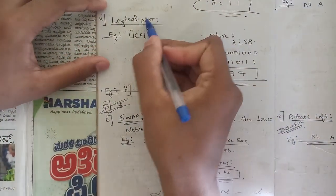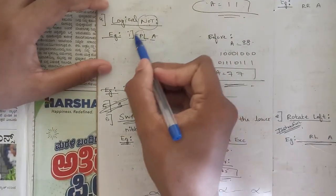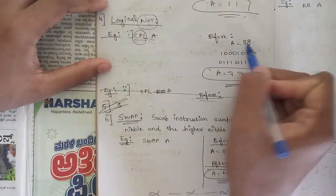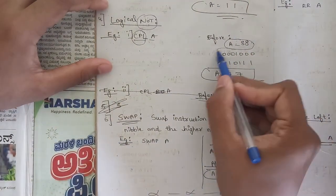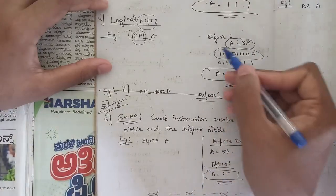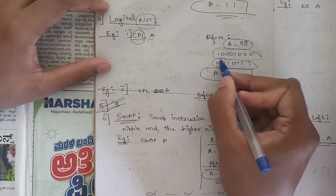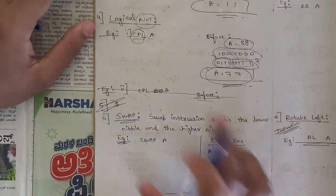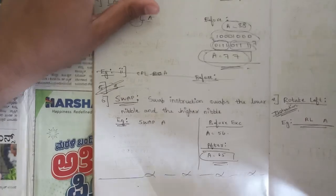For logical NOT, we use the command CPL A, where CPL stands for complement. For example, if A is 38H, applying CPL A reverses all bits — 1s become 0s and 0s become 1s. After the reversal, the answer is 0111 0111, which is 77H. So the new value of A after CPL A is 77H.